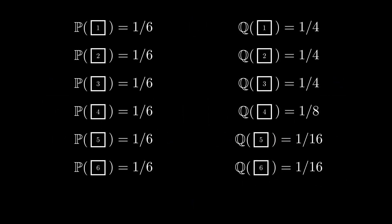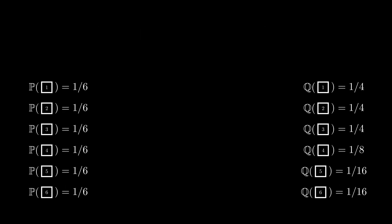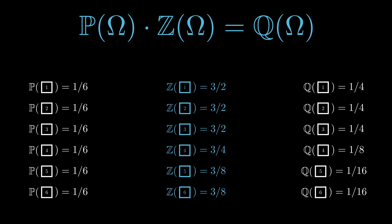Let's write this in a different format. If P and Q are in fact equivalent, there is a function, in fact a random variable which we will call Z, that maps the probabilities of P to the probabilities of Q.